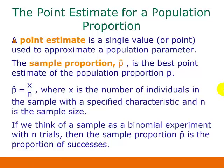If the P-hat value is not given to us in a problem, we can calculate it by taking X and dividing by N, where X is the number of individuals in the sample with a specified characteristic, and N is the sample size. Another way to think about this is if we think of a sample as a binomial experiment with N trials, then the sample proportion P-hat is the proportion of successes — the number of successes X divided by the number of trials N.